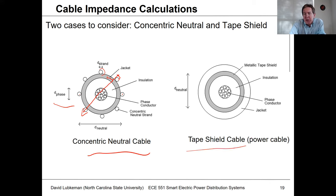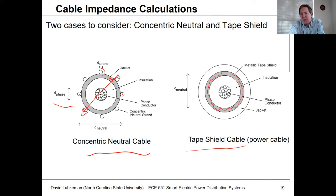For the tape shield case, we have a metallic tape shield around the phase conductor. This will have a certain cross-sectional area, and depending on the material and cross-sectional area, it will have a certain resistance. There's also a term D-neutral, which goes from the center on one side to the center on the other.